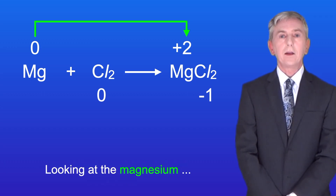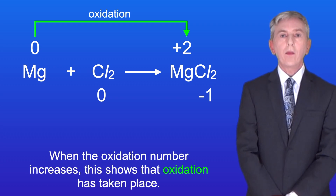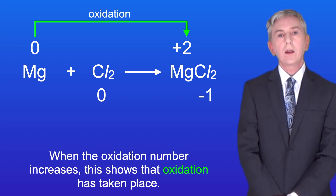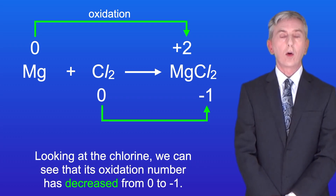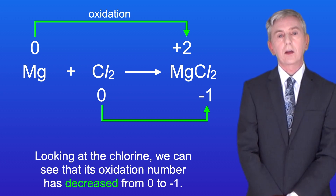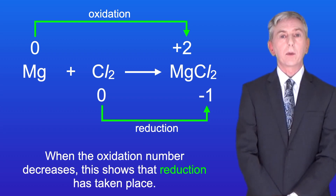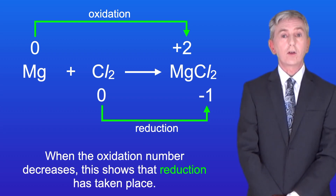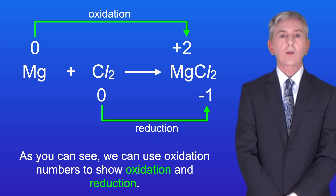Looking at the magnesium we can see that its oxidation number has increased from 0 to plus 2. When the oxidation number increases this shows that oxidation has taken place. Looking at the chlorine we can see that its oxidation number has decreased from 0 to minus 1. When the oxidation number decreases this shows that reduction has taken place. So we can use oxidation numbers to show oxidation and reduction.